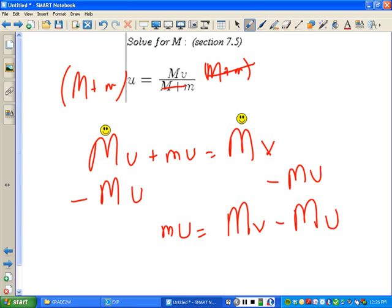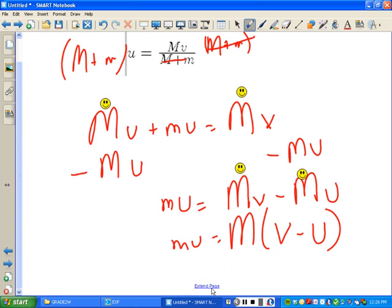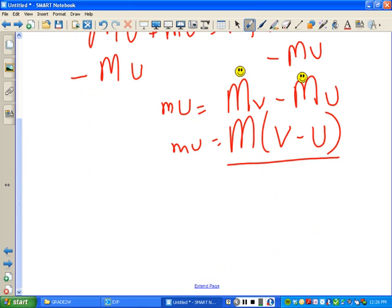And what you're going to get is little m u equals big M v minus big M u. Now you're solving for big M, right? So you have them on the same side now at least. Factor it out. v minus u. And now you're going to divide by v minus u. Wait, don't erase it. Actually, I want to erase it because I'm done.